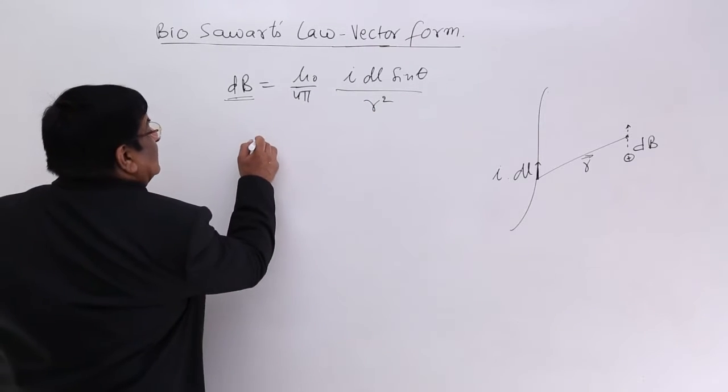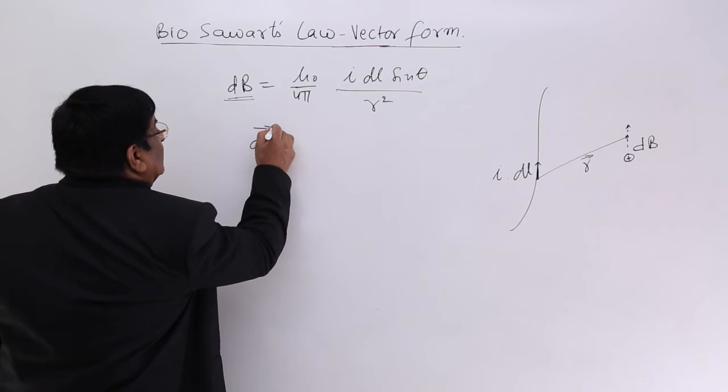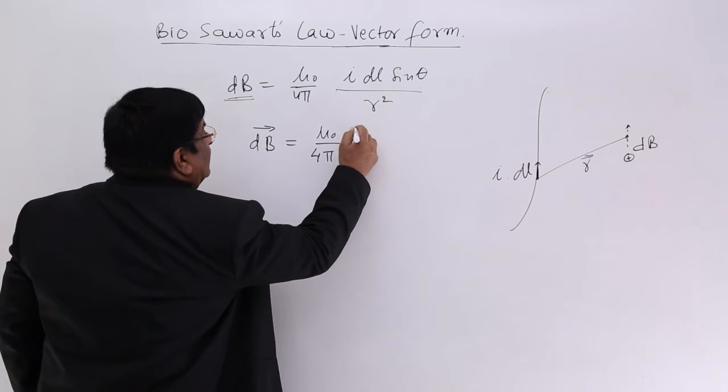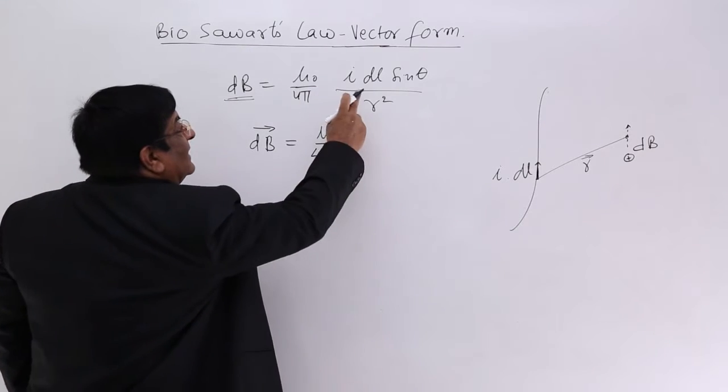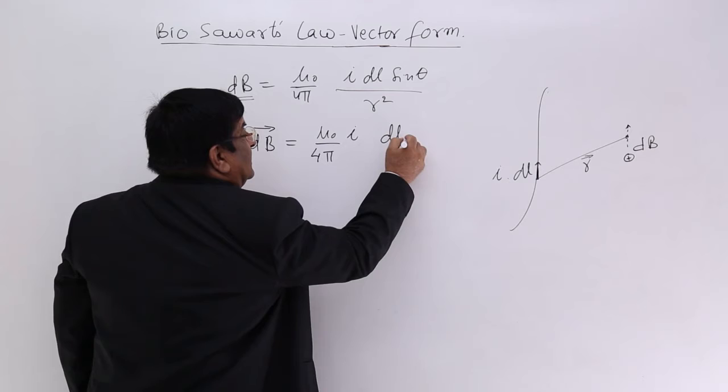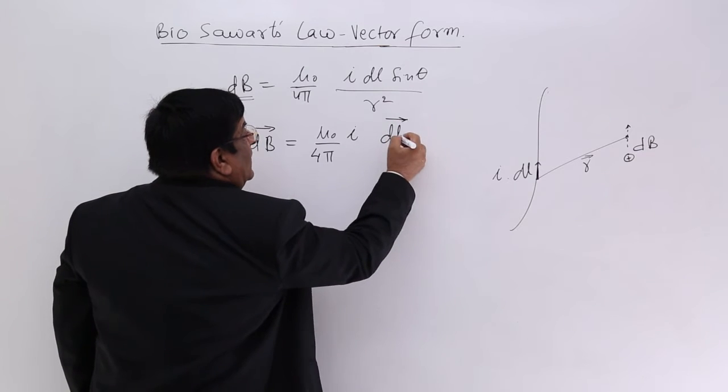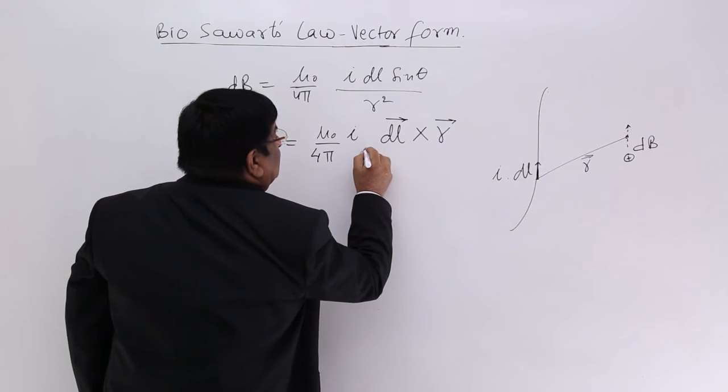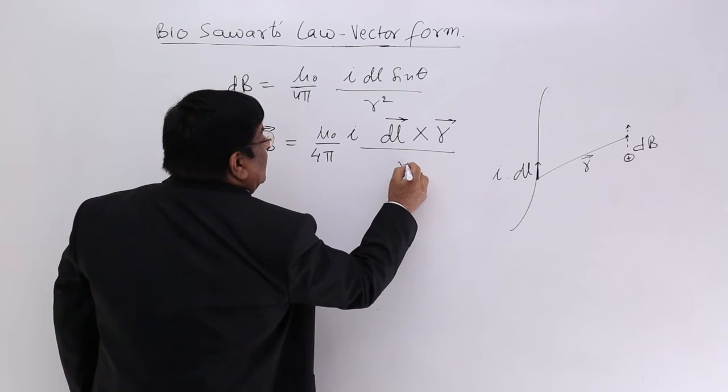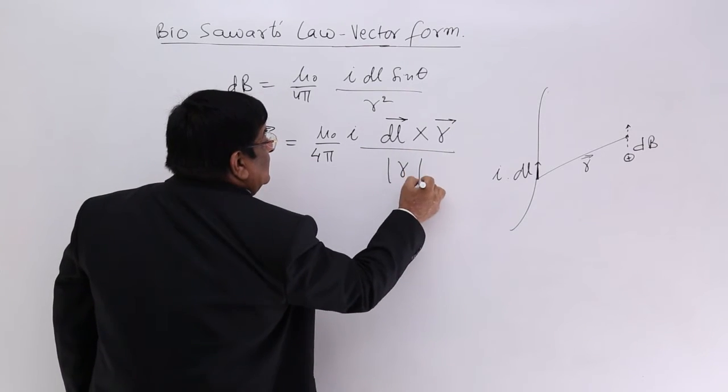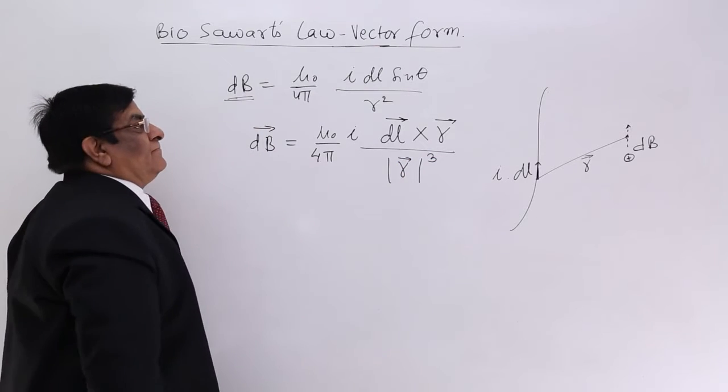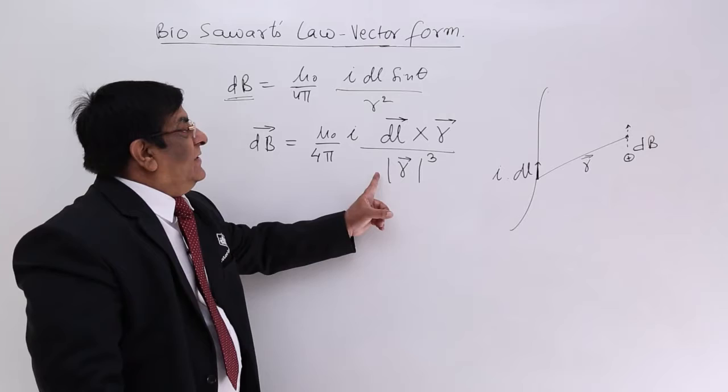How we convert it into a vector equation so that the direction is also represented? The answer is dB vector is given by μ₀/4π i dl vector cross vector r divided by r cube. This is the formula for vector form.